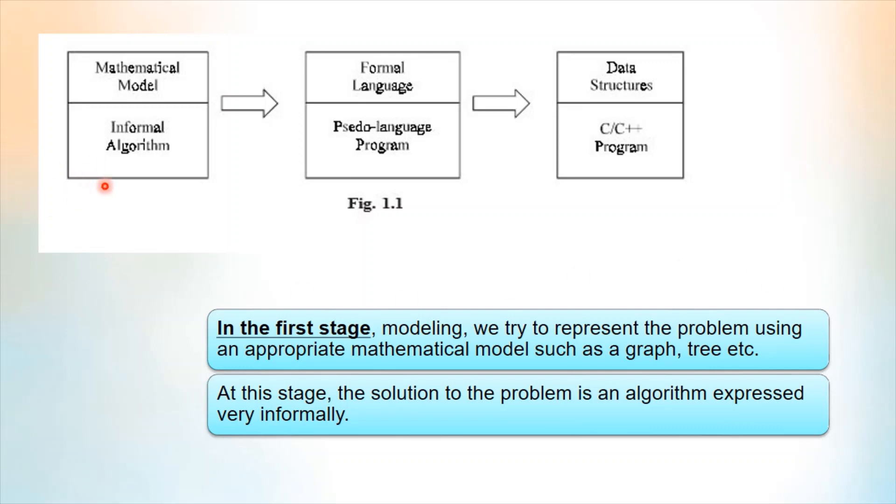In the first stage, we try to represent the problem using an appropriate mathematical model, such as a graph, tree, etc. In this stage, the solution to the problem will be expressed in a very formal way. So in this stage, an informal algorithm is written.